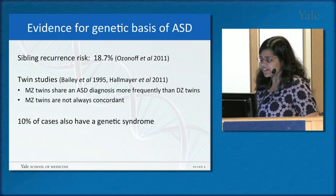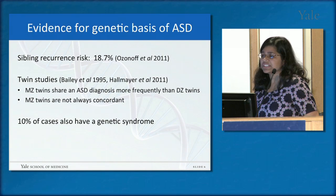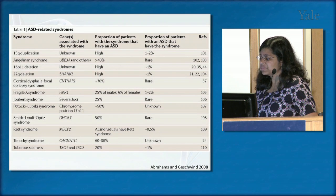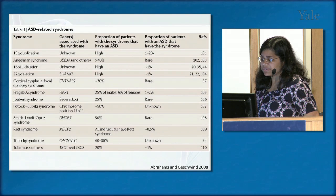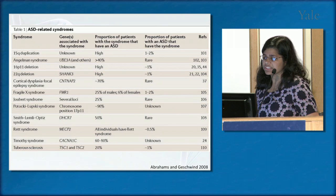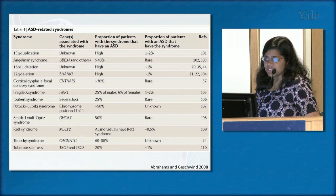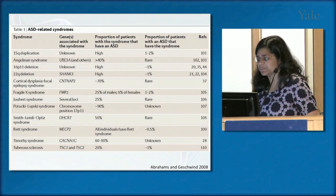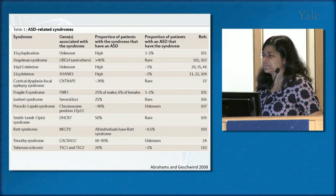Another line of evidence is that about 10% of cases also have a genetic syndrome traced to specific mutations in specific genes. Examples of autism-related syndromes include the 15q duplication, Angelman syndrome, 16p11, and Fragile X syndrome — which is due to mutations in a gene called FMR1. About a quarter of males and 6% of females with Fragile X meet criteria for autism. However, if you look at the reverse — the proportion of autism patients who have Fragile X — it's only 1% to 2%, making it a rare cause of autism.